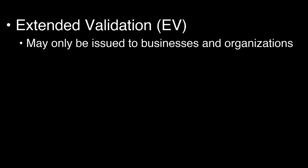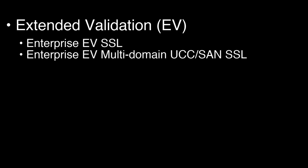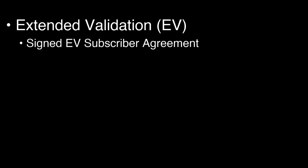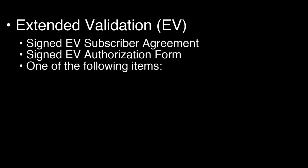Extended Validation, or EV certificates, represent a higher standard of Internet trust and require some additional steps by the applicant. EV certificates may only be issued to businesses or other registered organizations, not to individual persons. SSL.com currently offers Enterprise EV SSL, Enterprise EV Multi-Domain UCC SAN SSL, and EV Code Signing. Applicants for EV certificates should submit the following to SSL.com: a signed copy of the EV subscriber agreement and a signed copy of the EV authorization form.